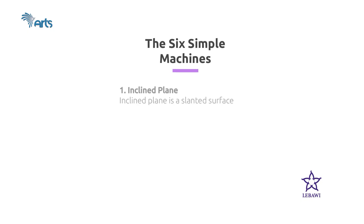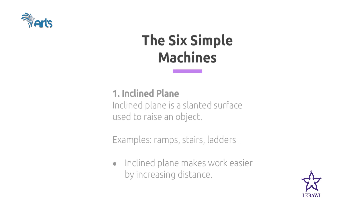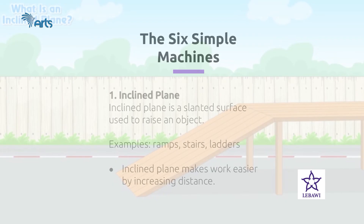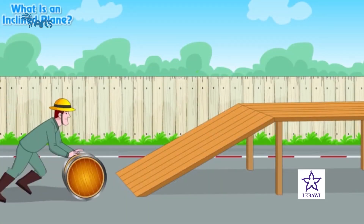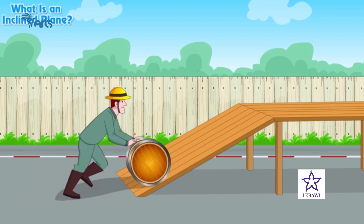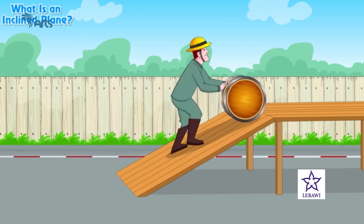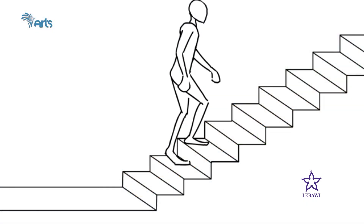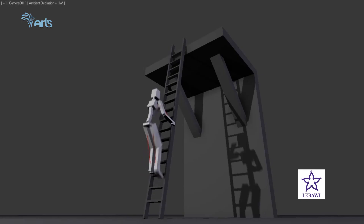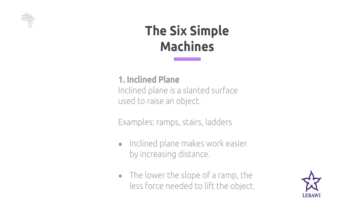Let us see the six simple machines one by one. The first one is inclined plane. An inclined plane is a slanted surface used to raise an object. It makes our work easier by increasing distance. You can take ramps, stairs, and ladders as examples of inclined plane. The lower the slope of a ramp, the less force needed to lift the object.